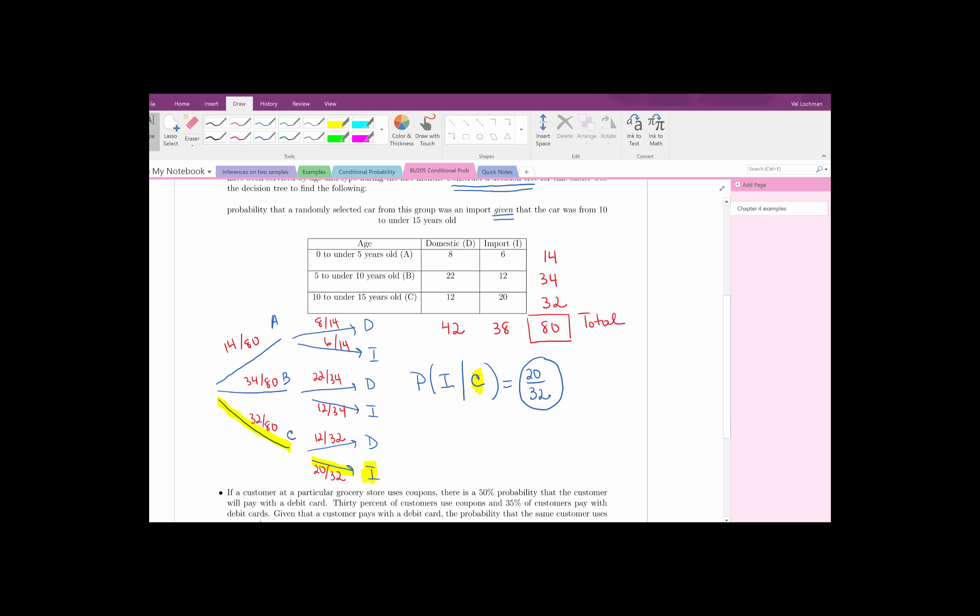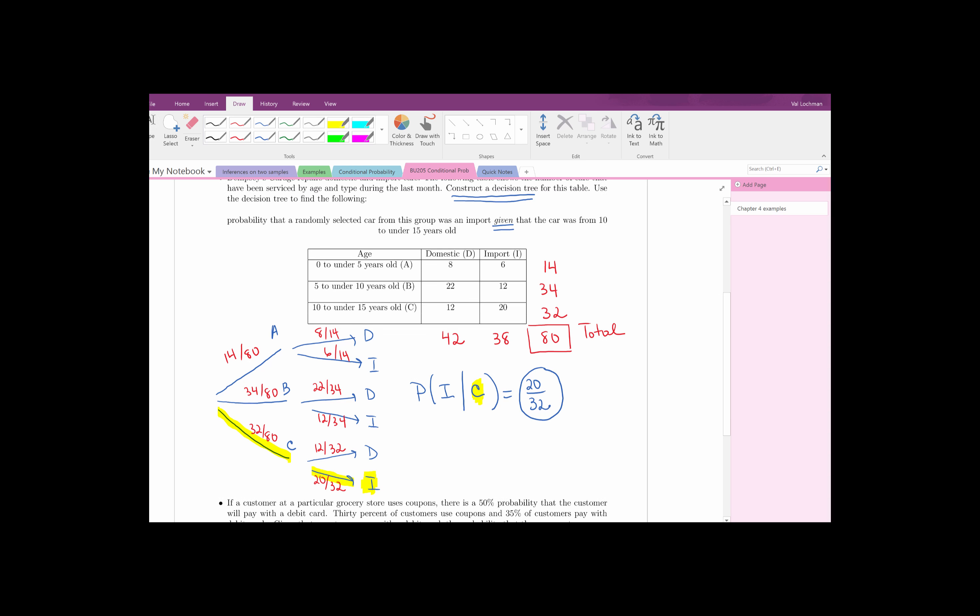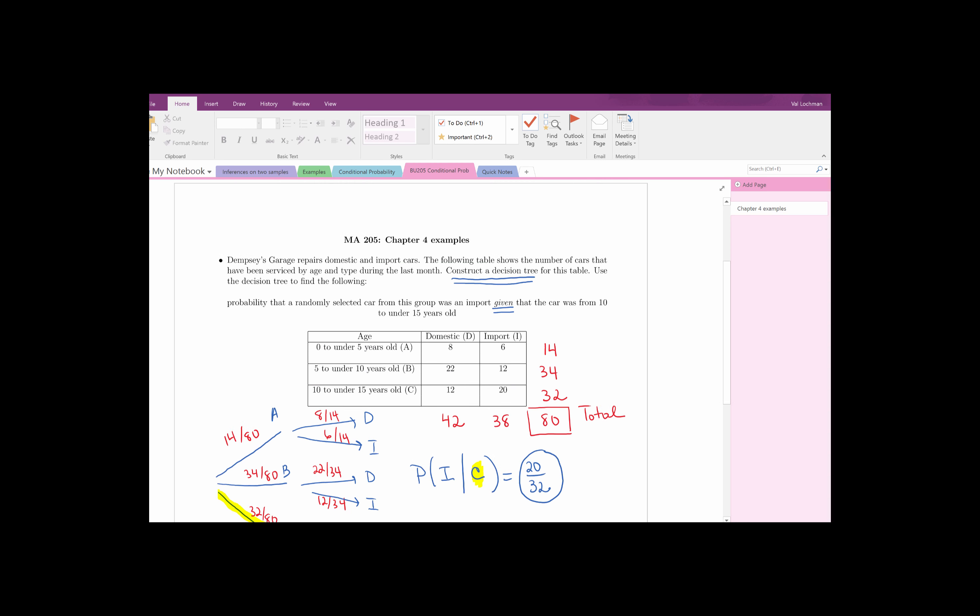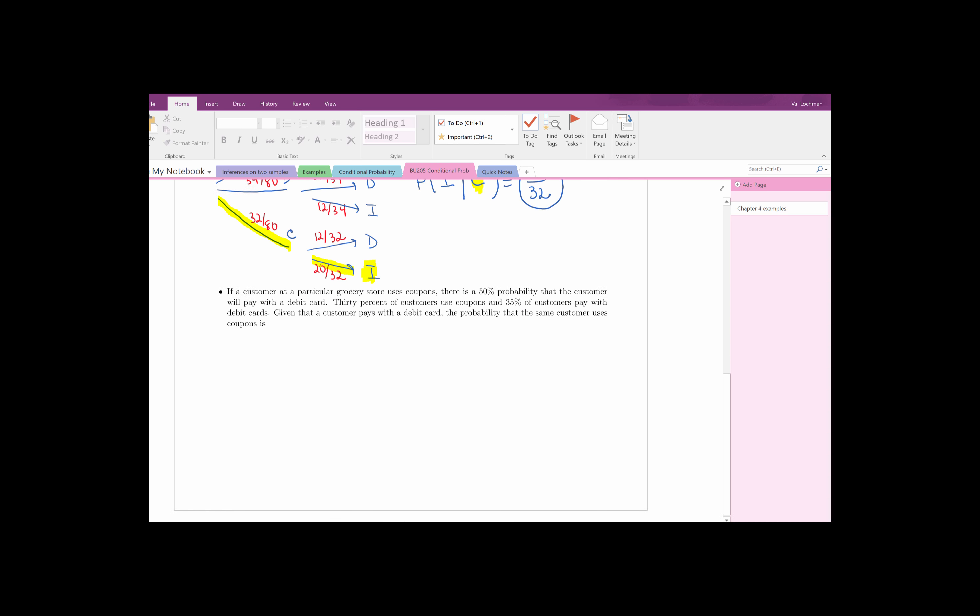So a decision tree is really nice. It gives you a whole picture of what can happen and gives you all of the probabilities of each event. And it's really easy to use if you're given a conditional probability. Let's go ahead and solve the next problem.